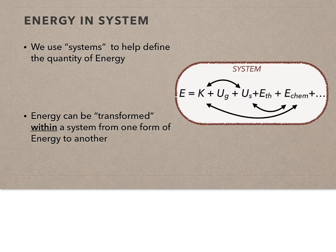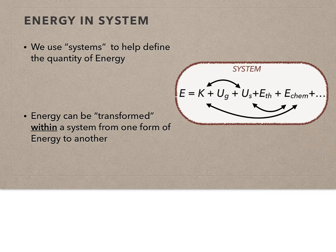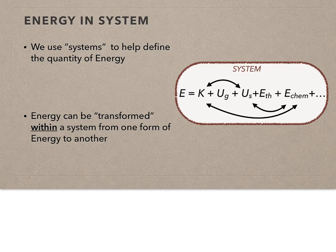Within a system, you may have different types of energy. K means kinetic energy; U_G is gravitational potential energy; there's potential from springs, thermal energy, and chemical energy. Chemical energy in a battery gets converted to electrical energy, which drives something to give it kinetic energy, and then the remote control car drives uphill gaining gravitational potential energy. Those are all energy transformations — from one state to another within the system. One of the most important skills is defining what the system is, what energies are associated with it, and what transformations are going on.